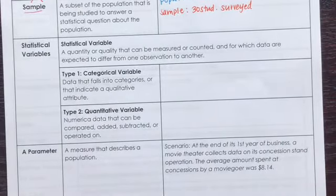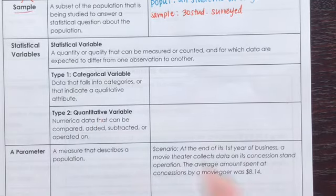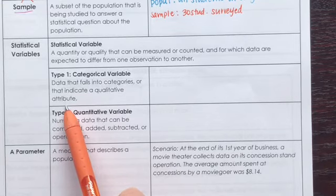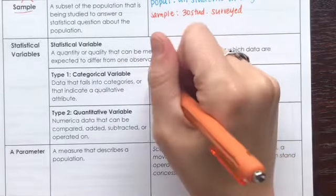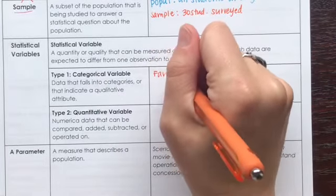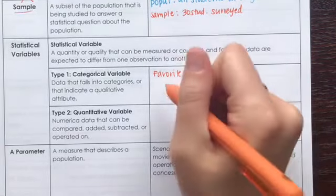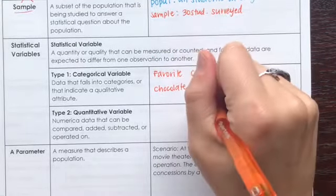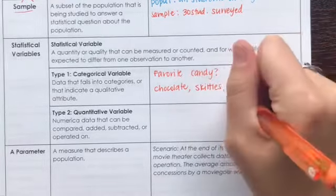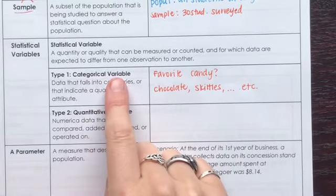Type one is categorical variables — data that falls into categories or that indicates a qualitative attribute, so something about them. A categorical variable could be something like: what is your favorite candy? Because that falls into categories — one category could be chocolate, one could be Skittles, and so on. Those are different categories, so that's considered a categorical variable.